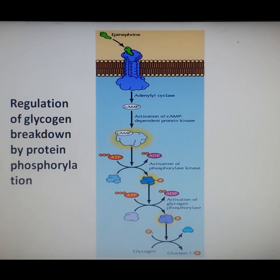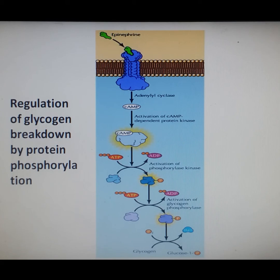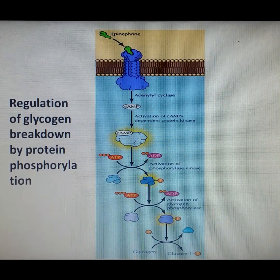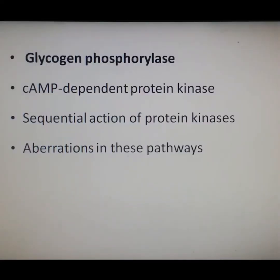In the diagram, epinephrine attaches to cell surface receptors, triggering production of cyclic AMP and activation of cyclic AMP-dependent protein kinase. This leads to activation of phosphorylase kinase, and finally glycogen is converted into glucose-1-phosphate. This is how regulation of glycogen breakdown by protein phosphorylation takes place.